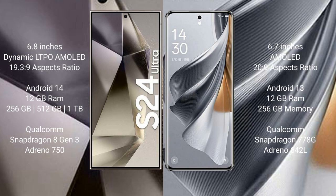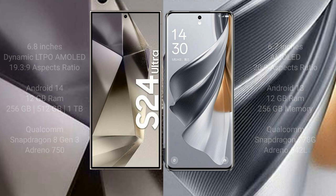The Samsung Galaxy S24 Ultra comes with 12GB RAM and 256GB, 512GB, or 1TB internal storage options, powered by a Qualcomm Snapdragon 8 Gen 3 processor and GPU. The Oppo Reno 10 Pro comes with 12GB RAM and 256GB internal storage, powered by a Qualcomm Snapdragon 778G processor and GPU.